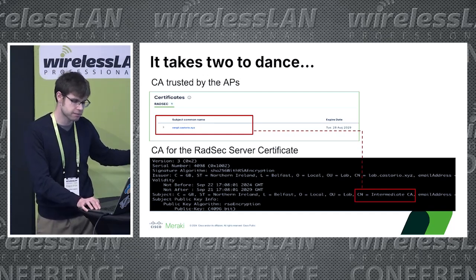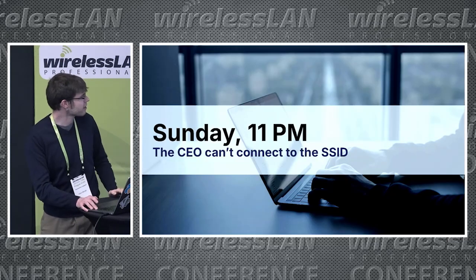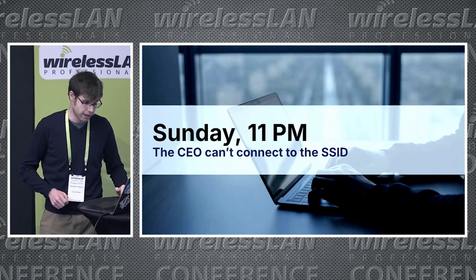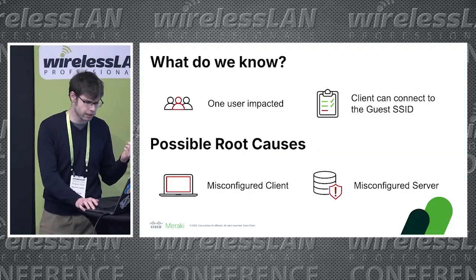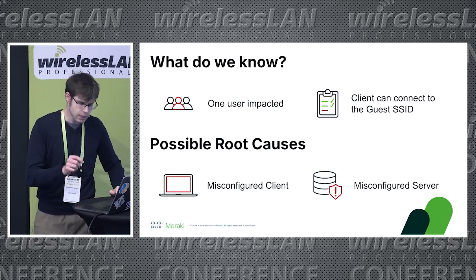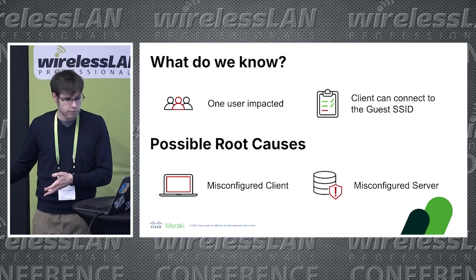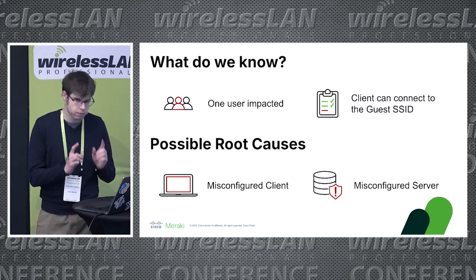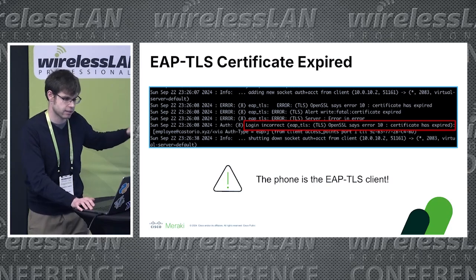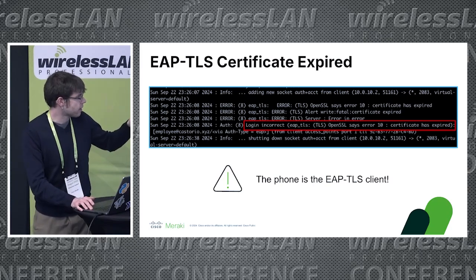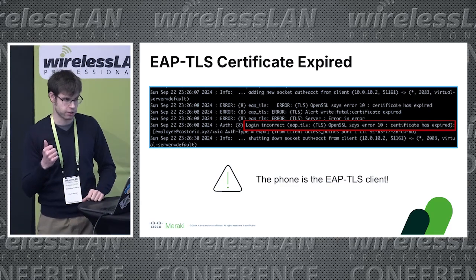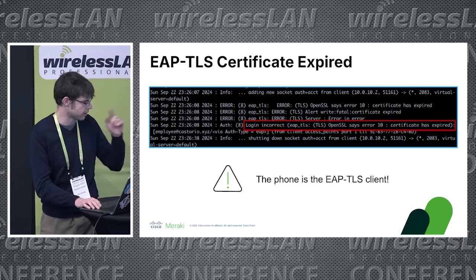A few months go by, and on a fateful Sunday when we are on call, we receive a ticket saying the CEO cannot connect to the SSID. It is a single client being impacted, and interestingly, they can connect to a guest SSID on the same access points. So probably this is related to client misconfiguration or RadSec misconfiguration. Going back to the logs, we see a EAP TLS problem related to a certificate that expired. This is very different from what we saw before, because here we go back to the EAP authentication — not the TLS tunnel between the access point and the RadSec server.